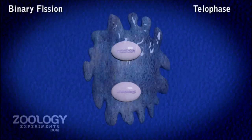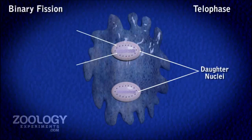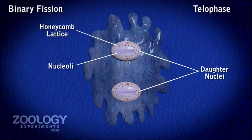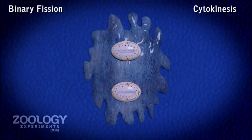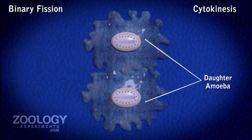Telophase. During telophase, the constriction of the nuclear membrane is completed and the nucleus is finally divided into two daughter nuclei. In each daughter nucleus, the lattice is formed beneath the nuclear membrane and the nucleoli reappear. Cytokinesis follows karyokinesis.